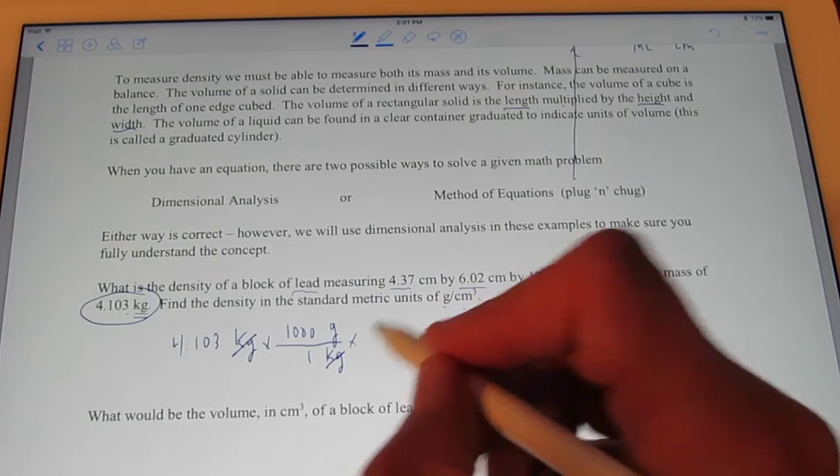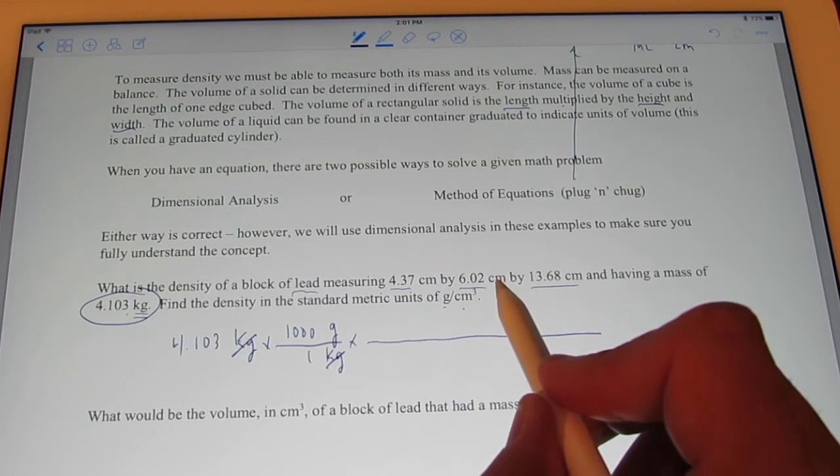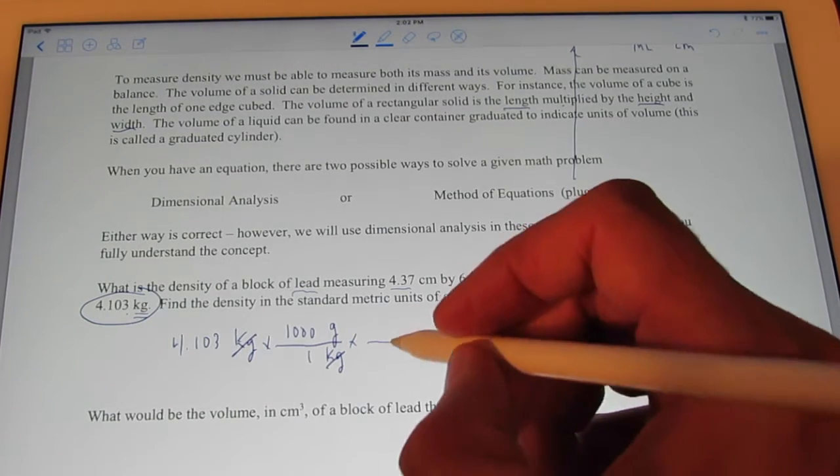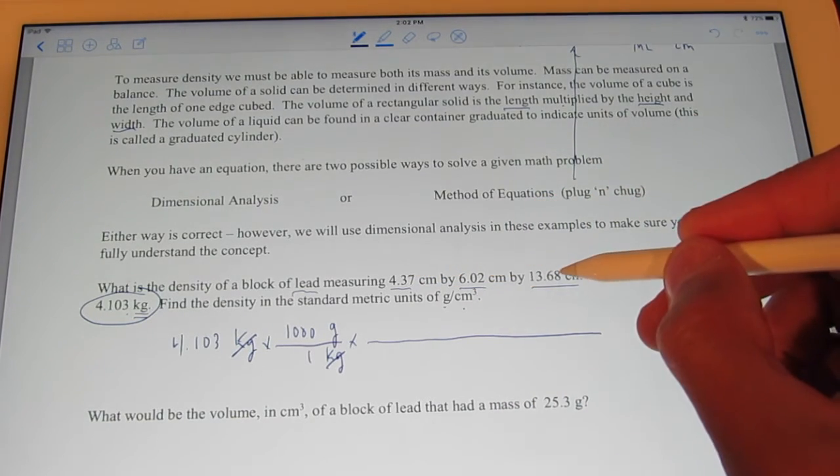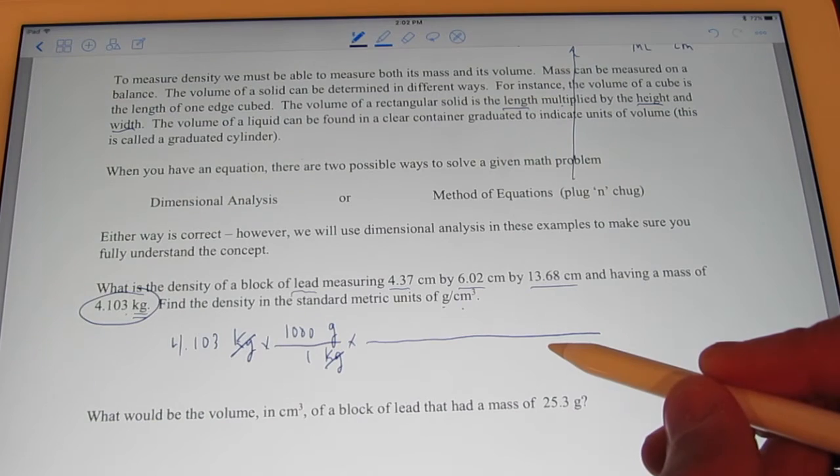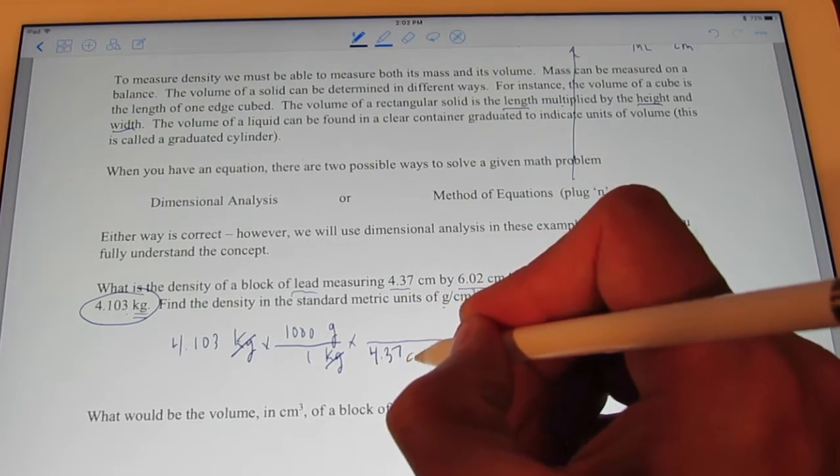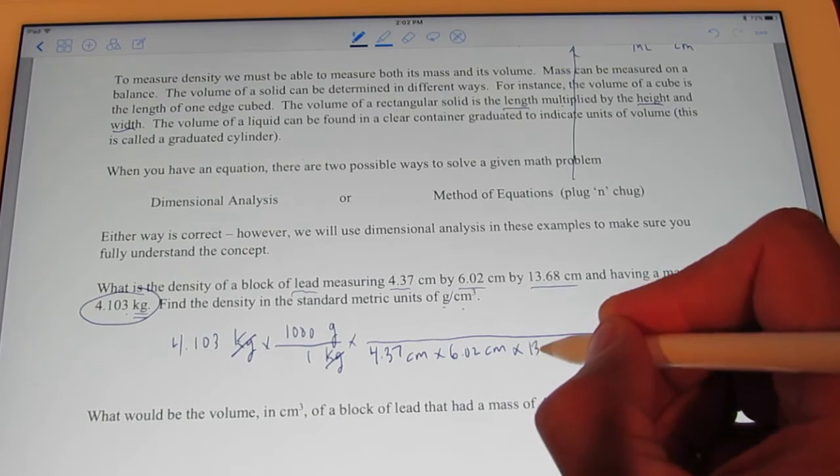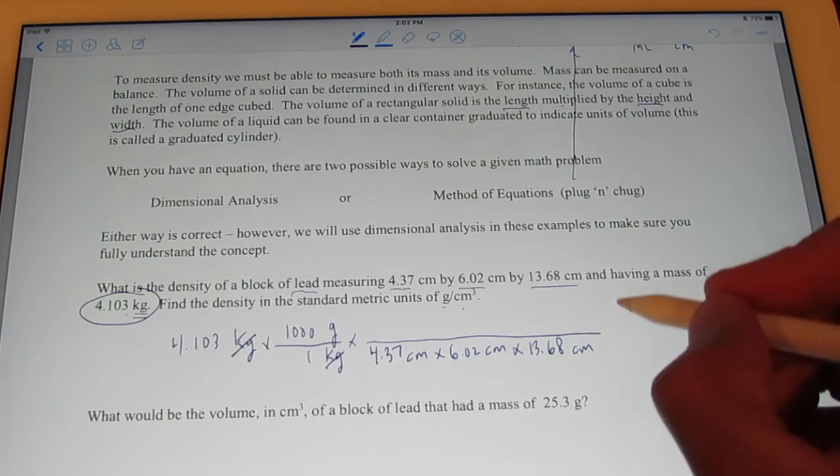Now, my denominator, I want to be in cubic centimeters. So, if I multiplied centimeter by centimeter by centimeter, wouldn't I have cubic centimeters? I would. So, let's divide by 4.37 and 6.02 and 13.68. That's the same as dividing by 4.37 times 6.02 times 13.68, all in my denominator. So, 4.37 centimeters and 6.02 centimeters and 13.68 centimeters. So, I'm dividing by centimeters, centimeter and centimeter. So, I'm dividing by centimeters cubed.